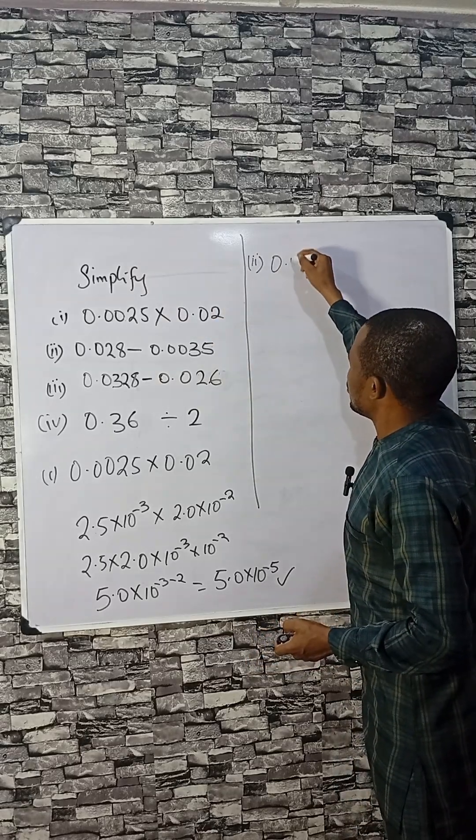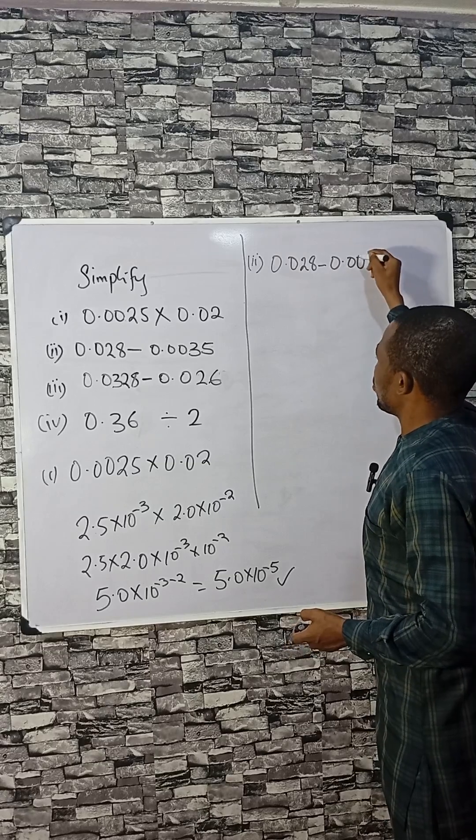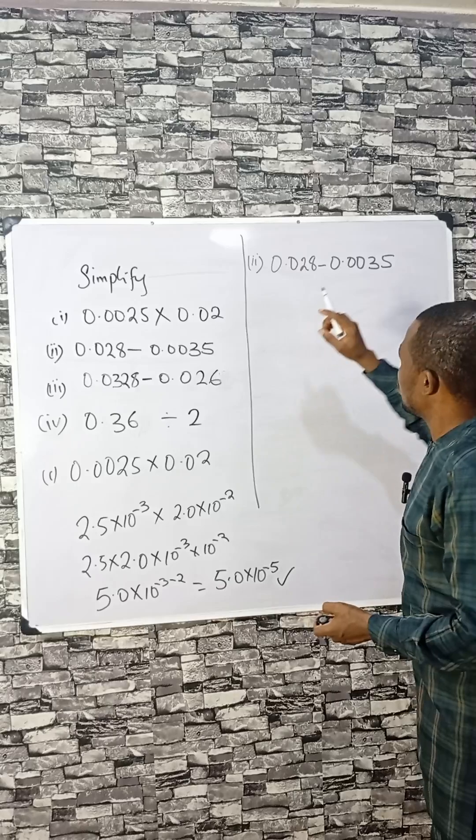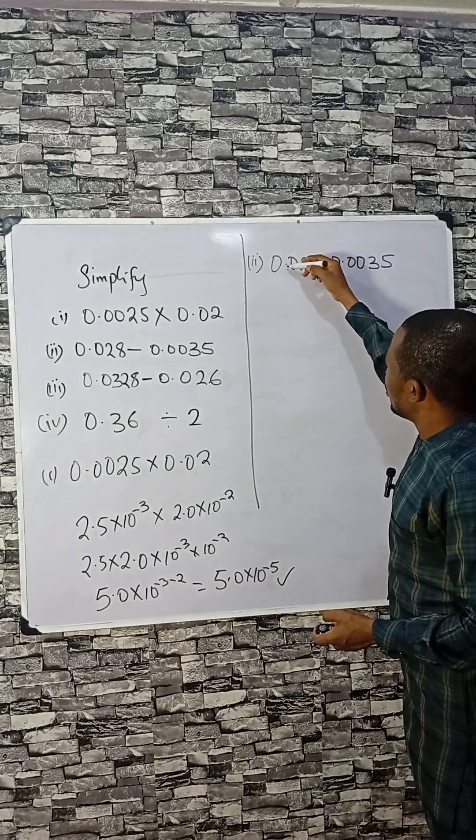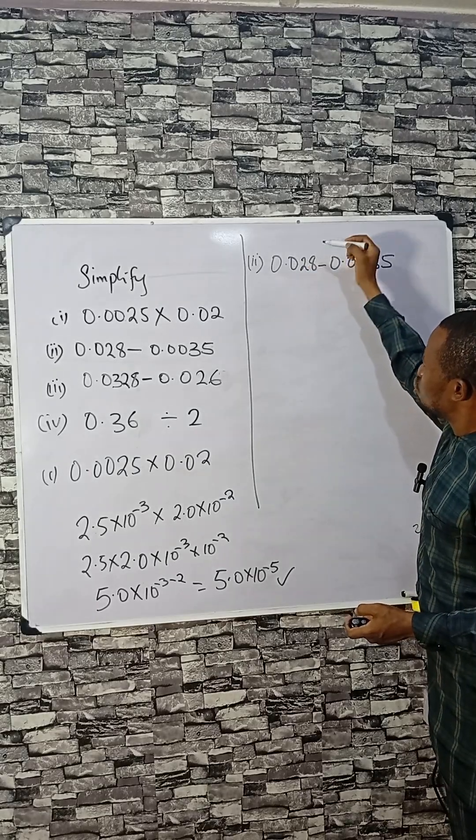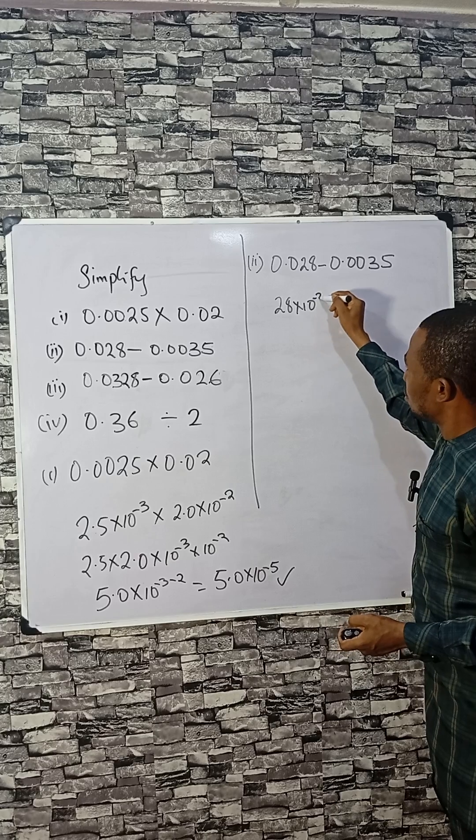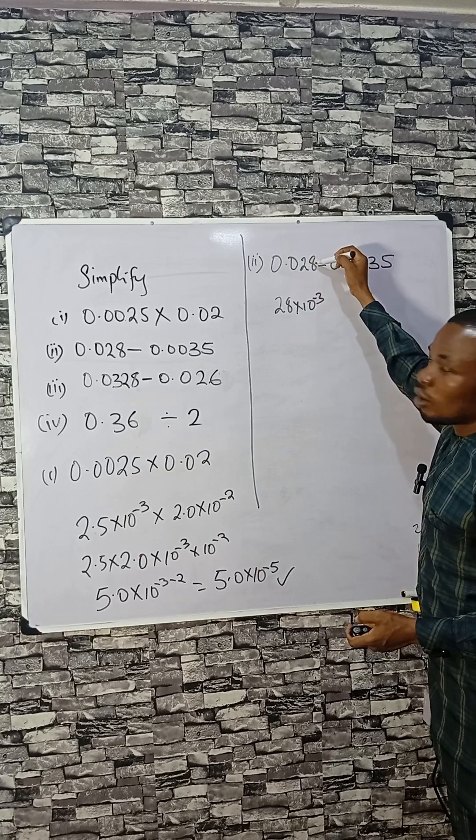You see, 0.028 minus 0.0035. There will be a little logic here. You need to ensure that they are all raised to the same power. Now here, move the decimal place - one, two, and three. That would be 28 times 10 raised by minus 3.